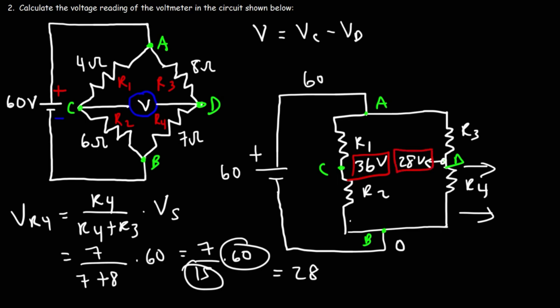So now that we have VC and VD, we can get the answer. So VC is 36, VD is 28. So that gives us a potential difference of 8 volts. So that is what is going to be read by the voltmeter. The voltmeter is going to read a voltage of 8 volts across point C and D.